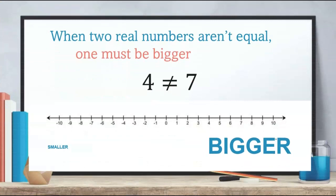So we have that four doesn't equal seven, and we like to put these on number lines. This can be really descriptive for us because we know that bigger numbers are over on the right side, and smaller numbers are over on the left side. So if two numbers aren't equal, one of them has to be on the right side of the other. Seven has to be bigger because it's on the right side. Any two numbers that are not equal — one of them must be bigger.